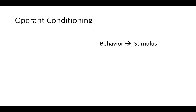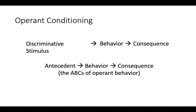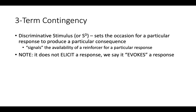The behavior or response produces a stimulus — this is a two-term operant relationship. Skinner pointed out that there are almost always events or situations that come before the behavior, which he called discriminative stimuli. When we talk about this operant conditioning relationship, we talk about the discriminative stimulus, the behavior, and the consequence — also referred to as the ABCs of operant behavior: antecedent, behavior, consequences. The discriminative stimulus in a three-term contingency sets the occasion for a particular response to produce a particular consequence; it signals the availability of a reinforcer. It doesn't elicit the response — it evokes it.